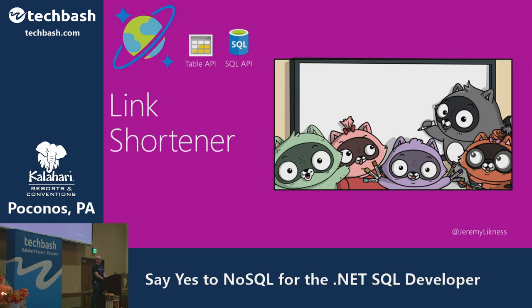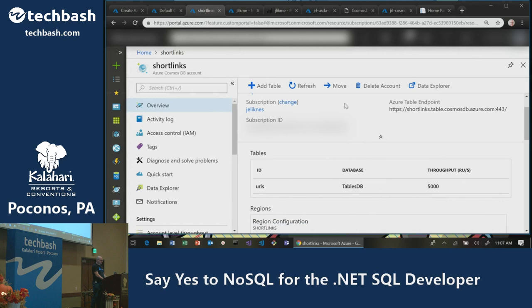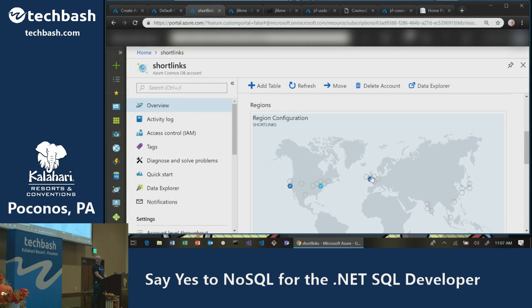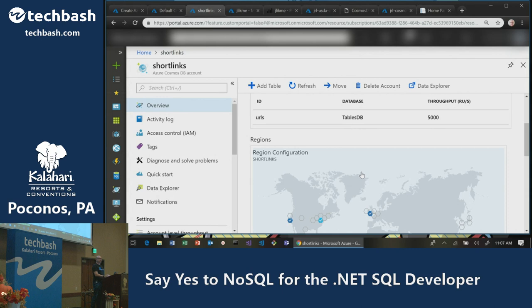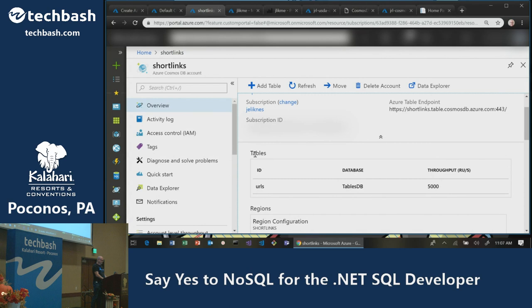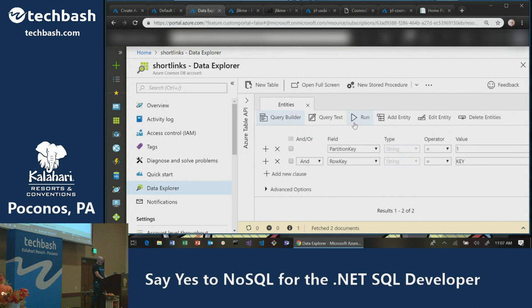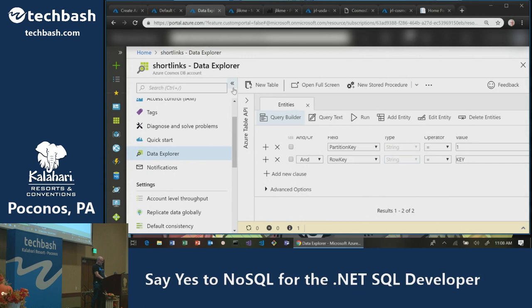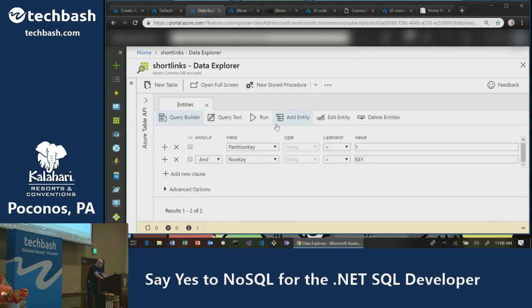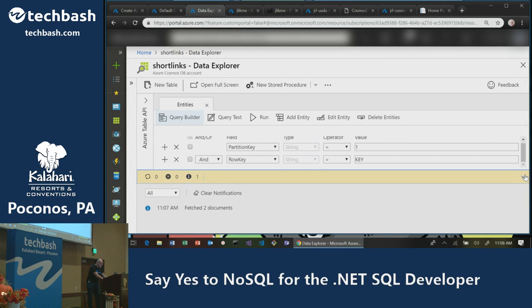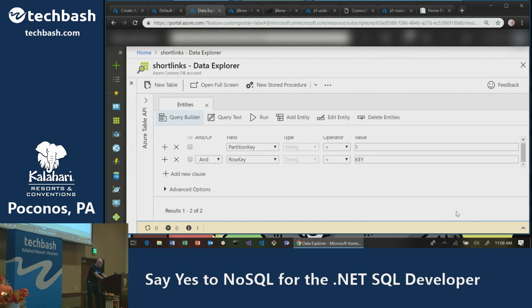The first example I want to jump into is a link shortener using table storage. I've set up a Cosmos DB database replicated to the West Coast, East Coast, and Europe — I did that just by selecting replication locations in a screen. In table storage you can see a list of tables including a URLs table. Let me pull that up in Storage Explorer — a tool that lets you navigate to accounts locally.